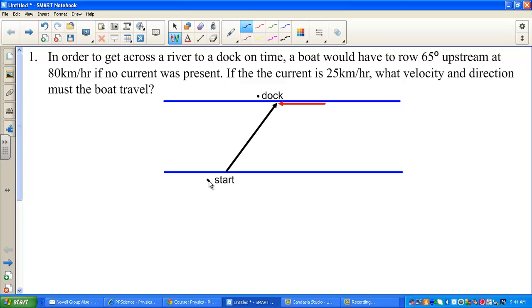We have to go 65 degrees upstream, so this is 65 degrees right here. Our speed is 80 kilometers per hour and the current is 25 kilometers per hour. So there's your 25 kilometers per hour. What velocity and direction must the boat travel?